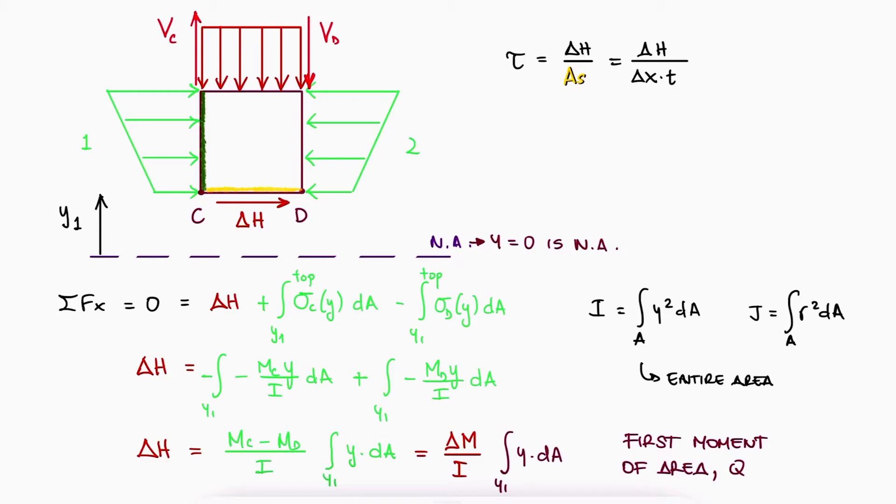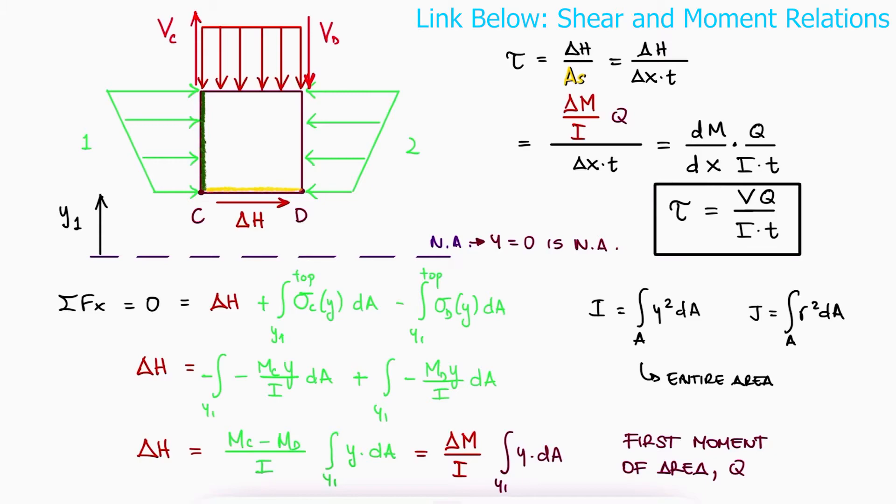This first moment of area q actually refers to the first moment of area about the neutral axis. If we now go back to the shearing stress expression and substitute what we found for delta h, and since we can identify that when the slice along the x-axis is very small, the expression delta m over delta x becomes dm dx, which is the derivative of the moment with respect to x, or just the shear force v, if you remember about the moment and shear relationships.